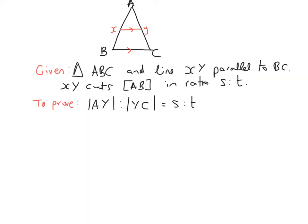In this question, we're trying to prove that when we divide up our line AB with our parallel line XY, it cuts it in a ratio S to T. So we want to show that the other side of the triangle, the line AC, will also be cut up in the same ratio S to T. We're saying that the distance between AY compared to YC equals S to T.